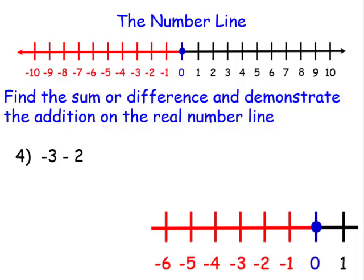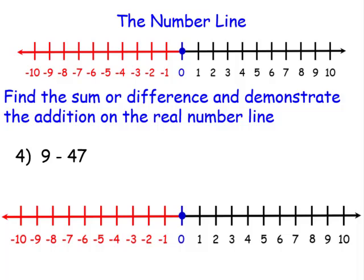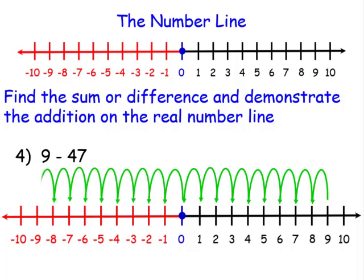Negative 3 minus 2: we begin at negative 3 and go to our left 2, and our answer is negative 5. Now, 9 minus 47: we'd begin at 9 and go to our left 47 times — that's a bit much. So there must be a better, and hopefully easier, way of doing these types of problems. And there is.